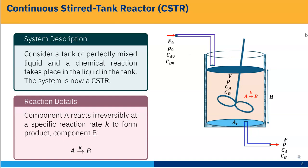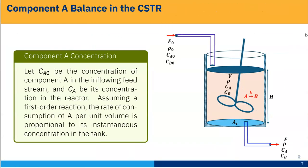Let CA0 be the concentration of component A in the flowing feed stream, and CA be the concentration in the reactor and coming out from the CSTR. Assume a first order reaction — the rate of consumption of A per unit volume is proportional to its instantaneous concentration in the tank.